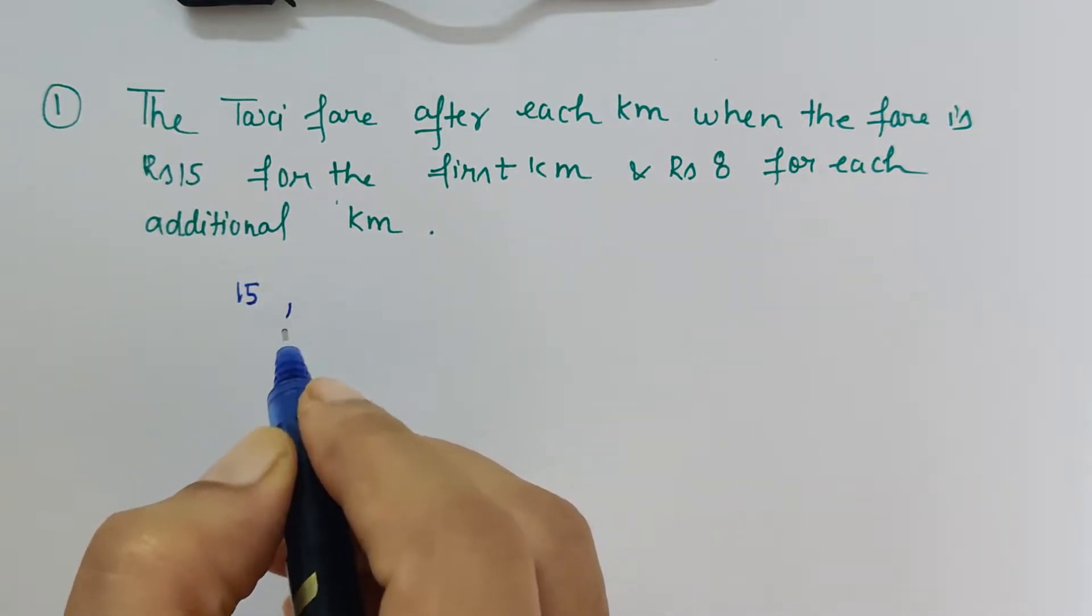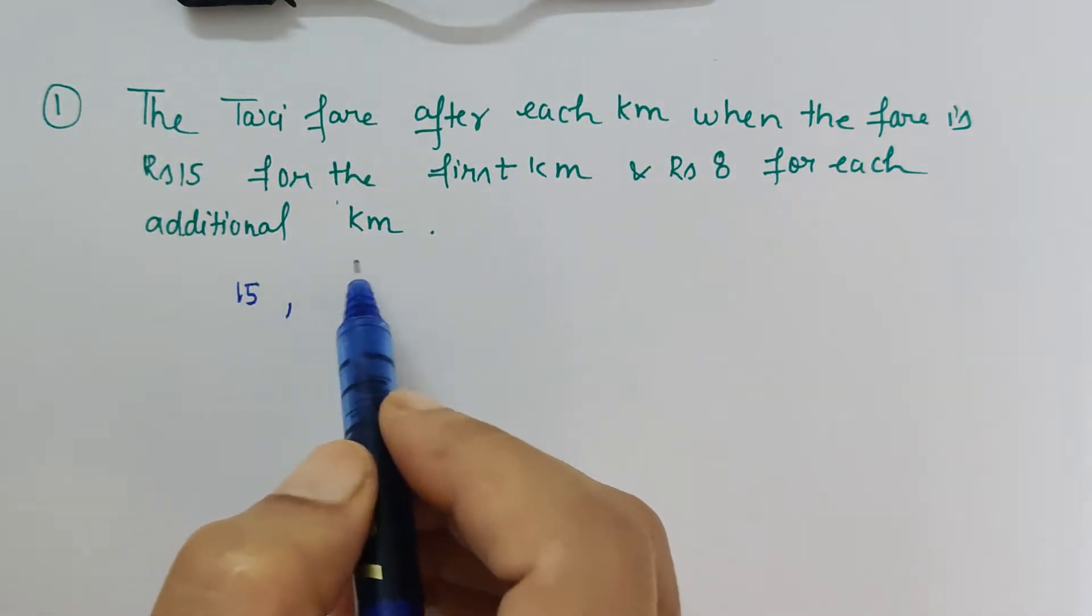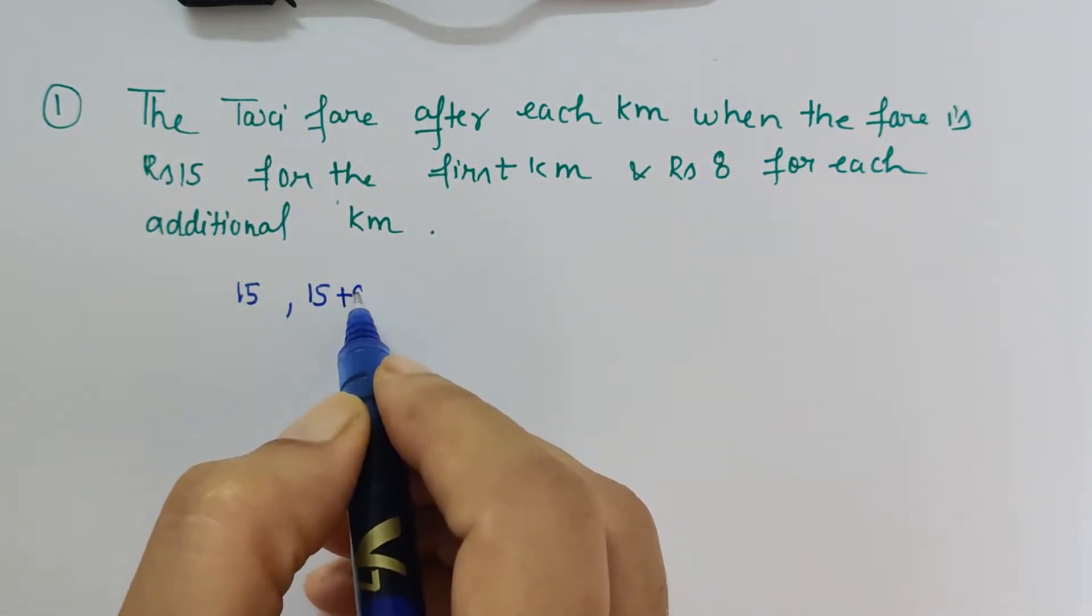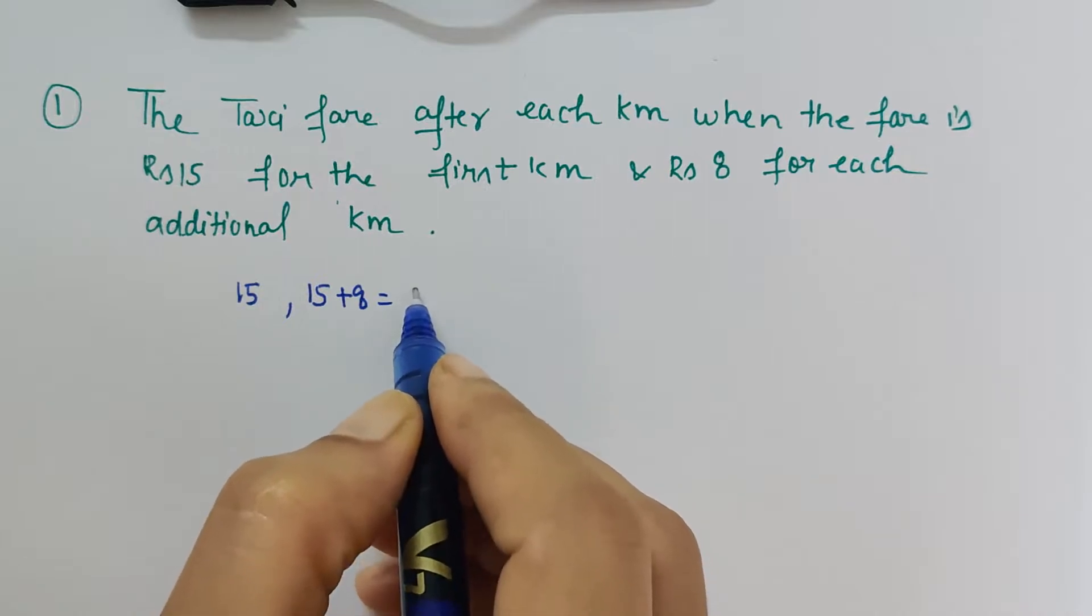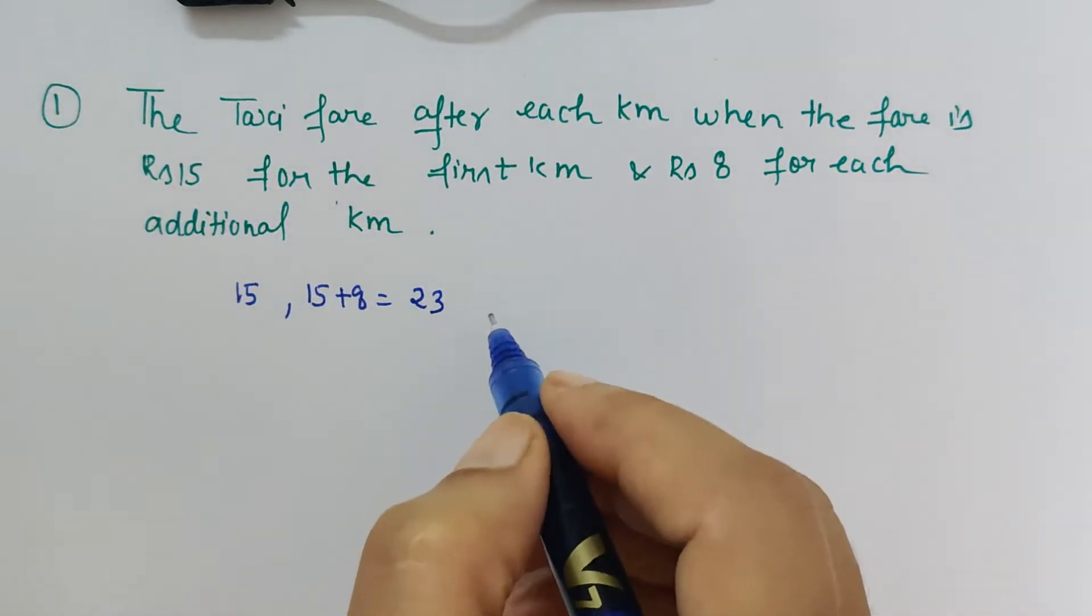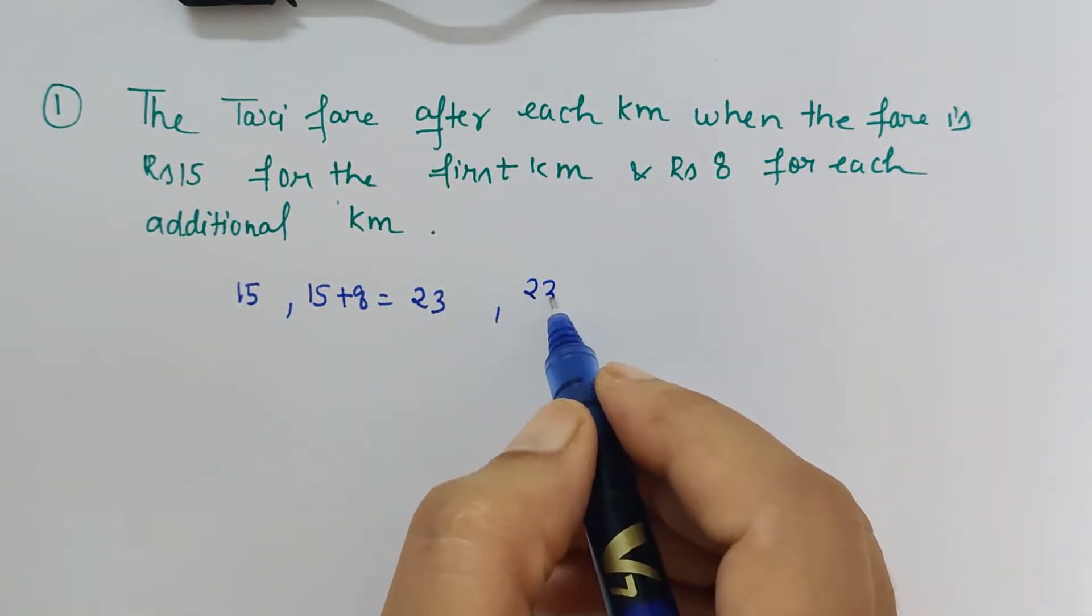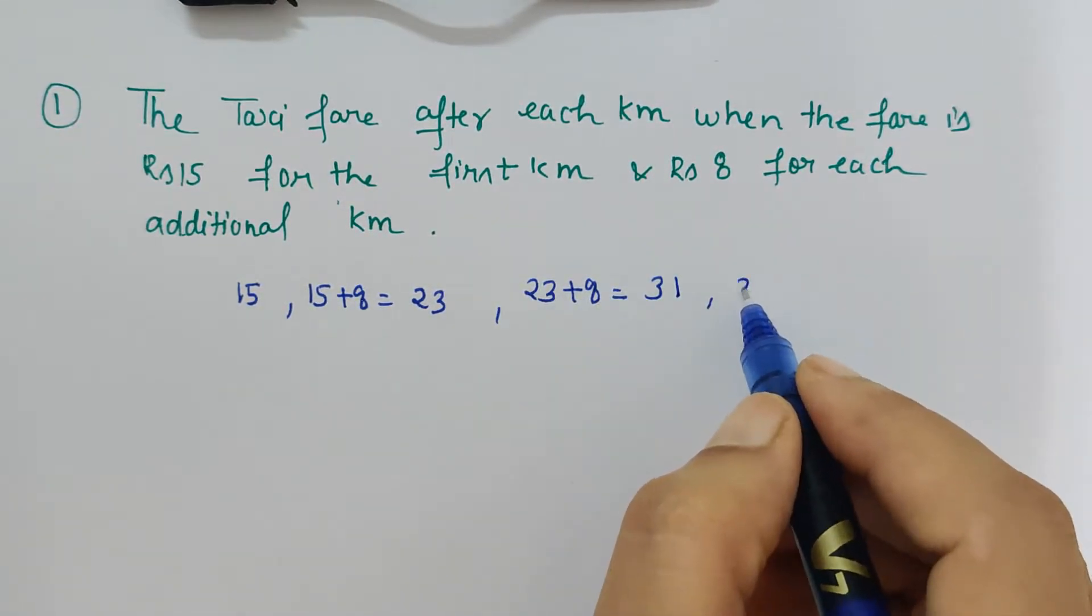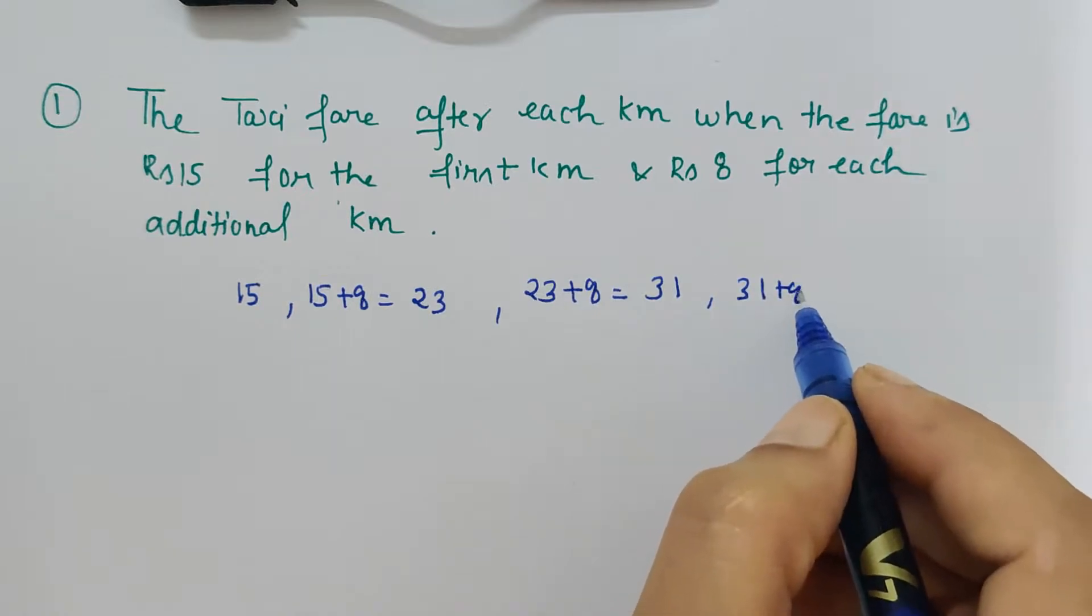For the next kilometer, rupees 8 for each additional kilometer. That means for the next kilometer, 15 plus 8 which is 23. And further next kilometer, 23 plus 8, it will be 31. And further next kilometer again it will